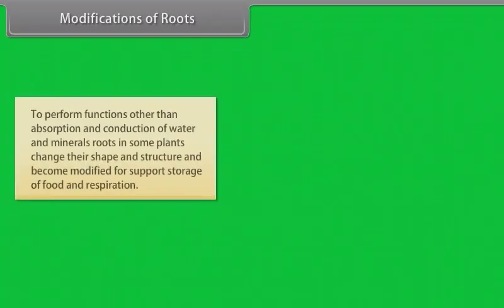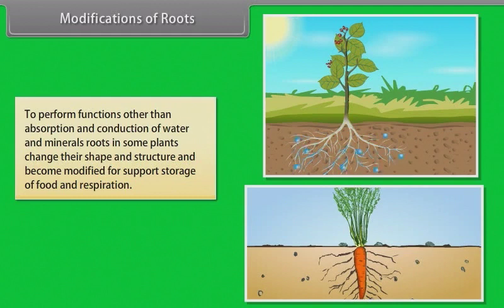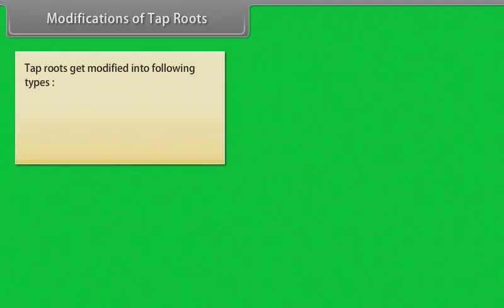Modifications of roots: To perform functions other than absorption and conduction of water and minerals, roots in some plants change their shape and structure and become modified for support, storage of food, and respiration. Modifications of tap roots: tap roots get modified into the following types.